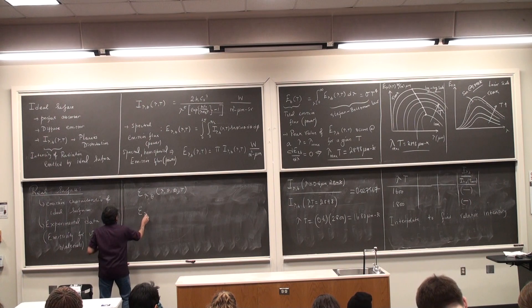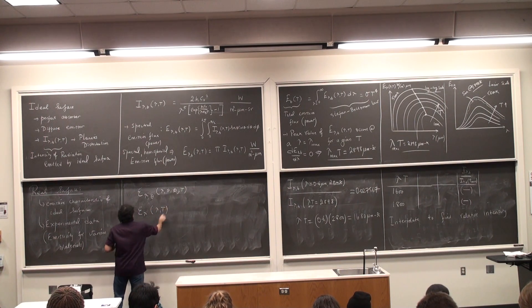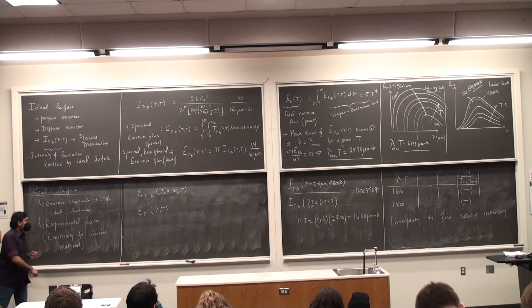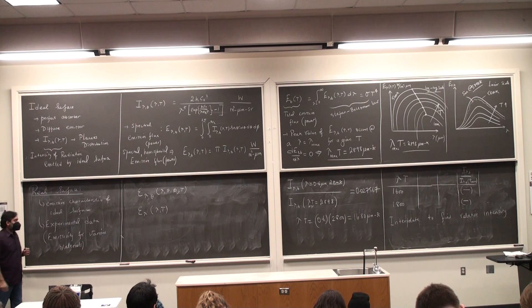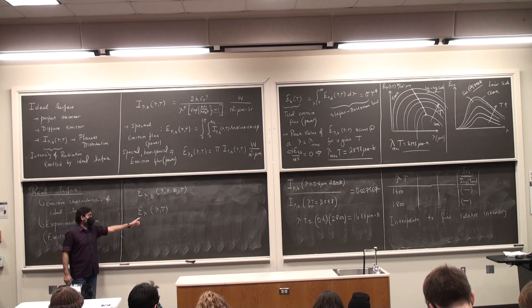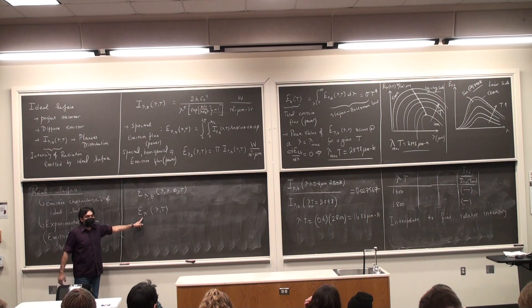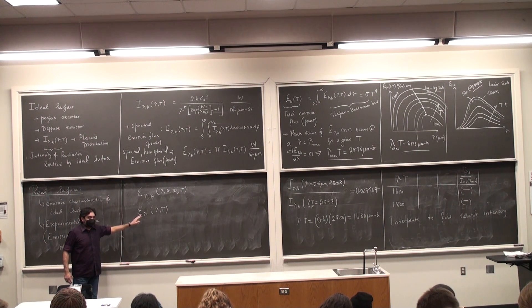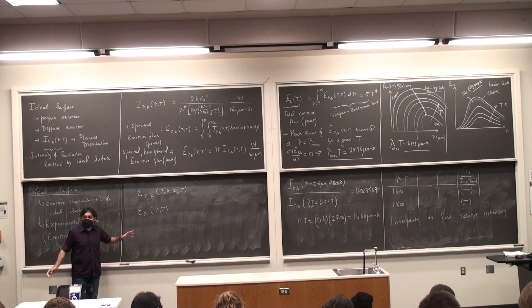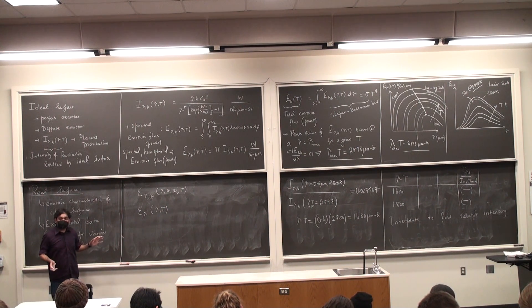Epsilon lambda. This is just going to be called as spectral hemispherical emissivity because I am integrating all the directions. And it is going to be a function only of wavelength and temperature. Everything is a function of temperature. Even if I don't write it, it is a function of temperature.